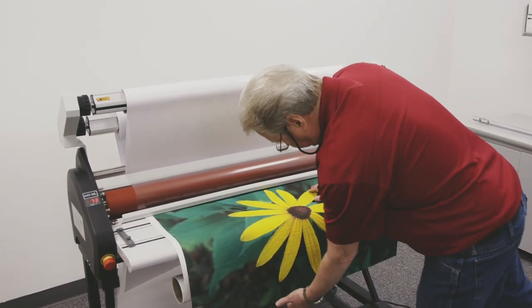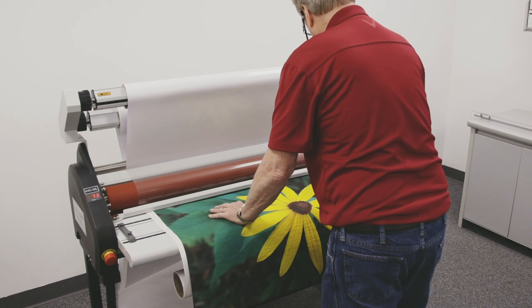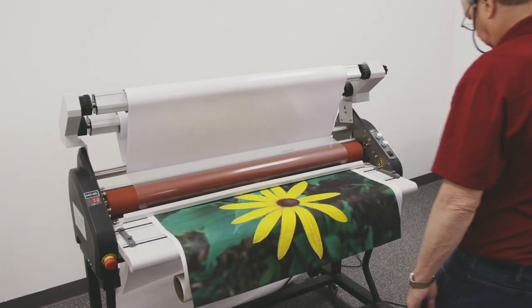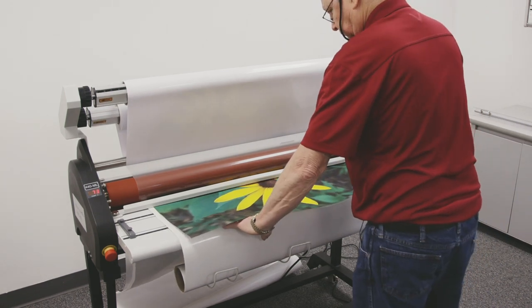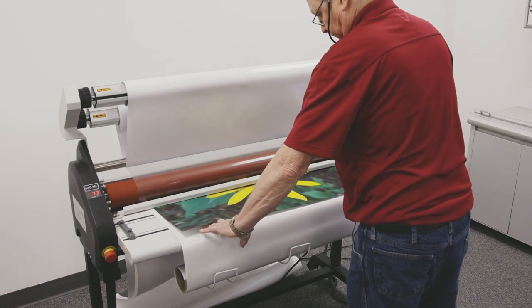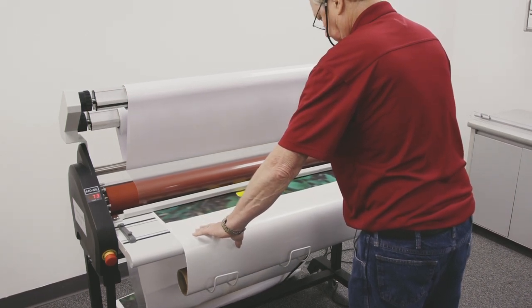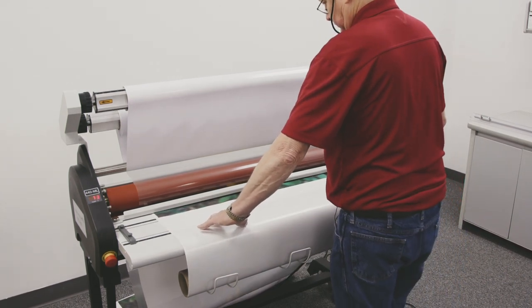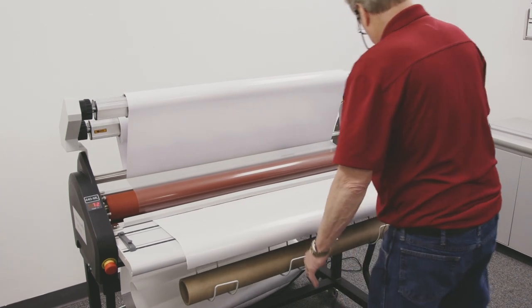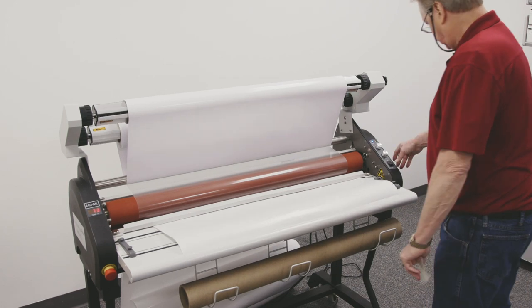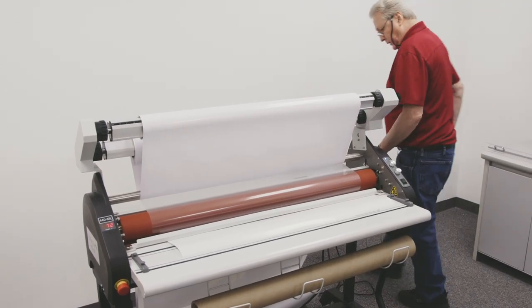Now as this runs through you're going to see some wrinkling on that liner because I don't have any brake tension on it. So it's just floating through the machine. I can add a little bit of tension to it by holding it with my fingers. Once it clears the backside I can go ahead and shut it off. Go back and cut it out.